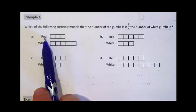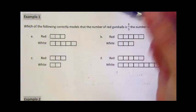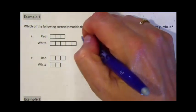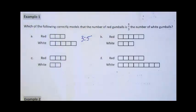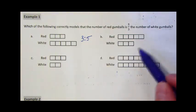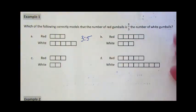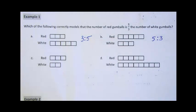In part A, the number of red gumballs to the number of white gumballs is three to five. In part B, the number of red gumballs to the number of white gumballs is five to three.